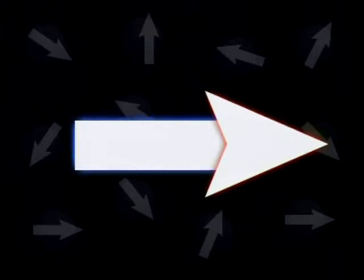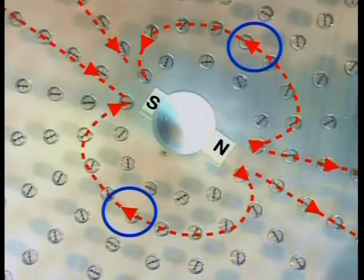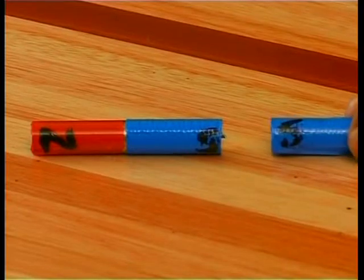At the micro level, we have the model of magnetic domains, and at the macro, the model of a magnetic force field. These models are carefully illustrated and linked to the practical investigations done in the laboratory. We have applied these models to explain why a compass works and carefully examined the nature and effect of the Earth's magnetic field.